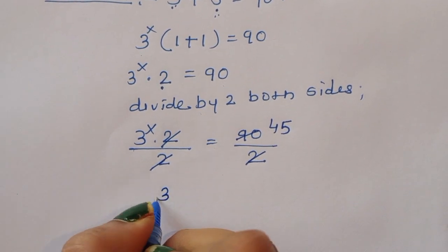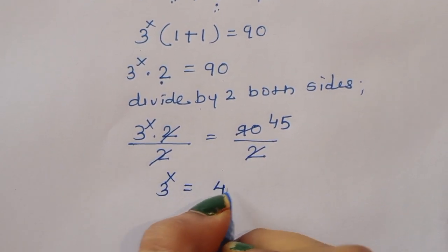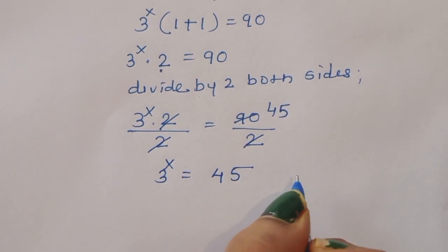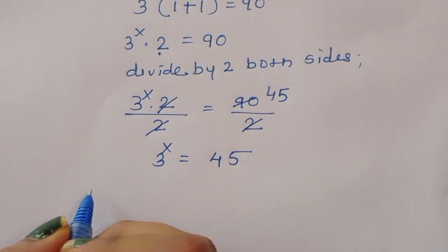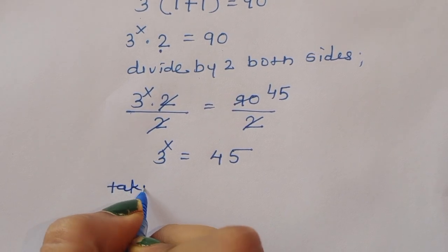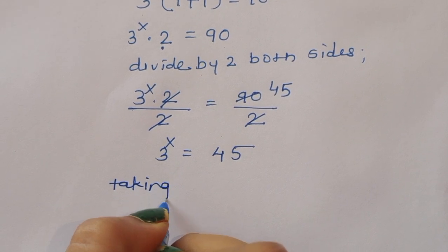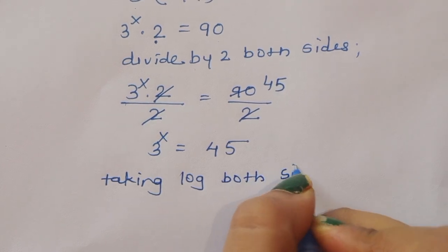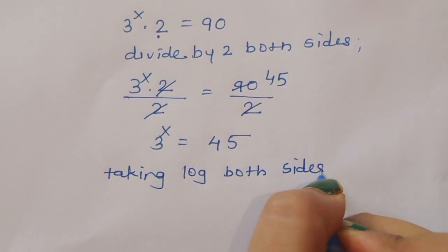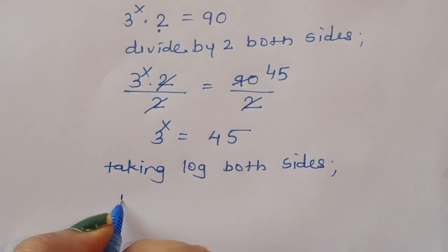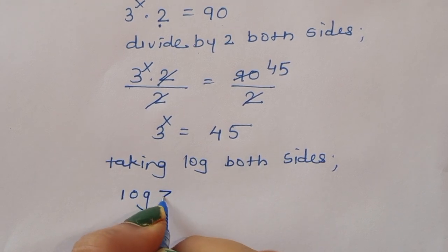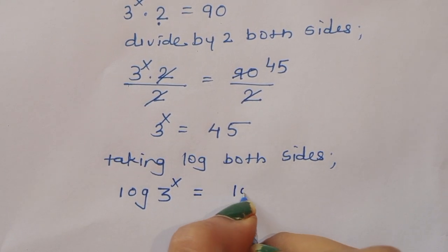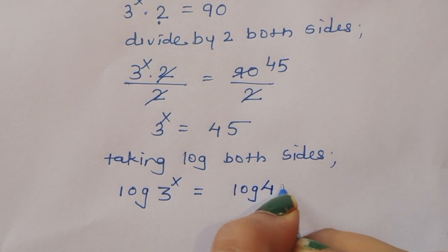Then we get 3 power x times 2 divided by 2 is equal to 90 divided by 2, and the 2 cancels, giving us 3 power x is equal to 45. Now we can take log on both sides.